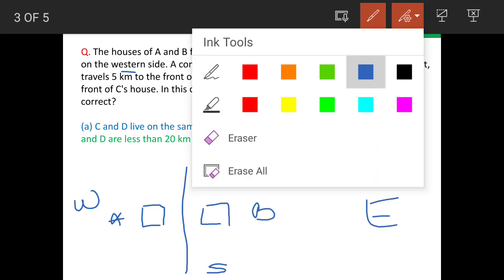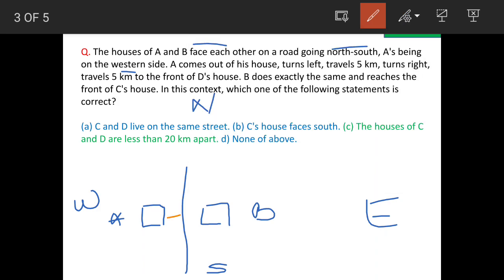The question says that A comes out of the house, turns left, travels 5 kilometers, then turns right, travels 5 kilometers. He is now standing in front of the house of another person called D.